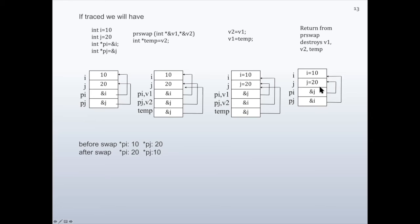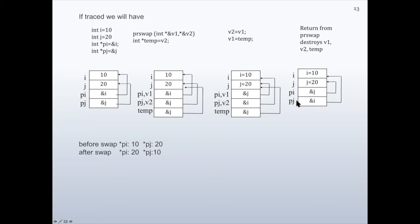So pi is now a pointer to j, and pj is a pointer to i. At the output: before swap, the content of the item pointed by pi is 10, so we see 10; and the content of the item pointed by pj is 20. After swap, we see the content of the item pointed by pi, which is now 20, and then the content of the item pointed by pj, which is now 10.